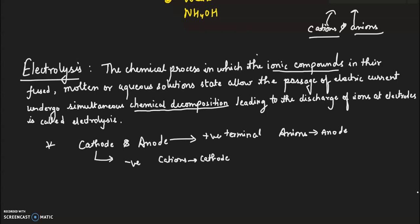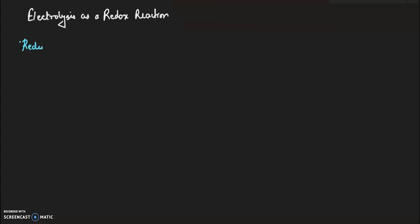Electrolysis as a redox reaction. Reduction process takes place at the cathode, while oxidation takes place at the anode. When the processes of reduction and oxidation take place simultaneously, then electrolysis is referred to as a redox reaction.